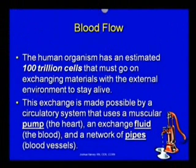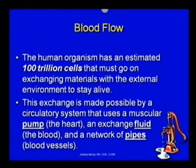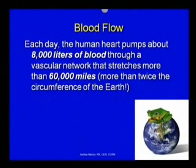The human organism has an estimated 100 trillion cells that must go on exchanging materials with the external environment just to stay alive. This exchange is made possible by a circulatory system that includes a muscular pump, which is your heart, an exchange fluid, which is your blood, and a network of pipes, which are called blood vessels. Each day the human heart pumps about 8,000 liters of blood through a vascular network that stretches more than 60,000 miles — that's more than twice the circumference of the earth.